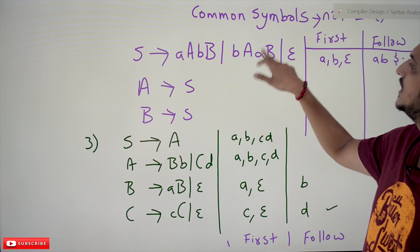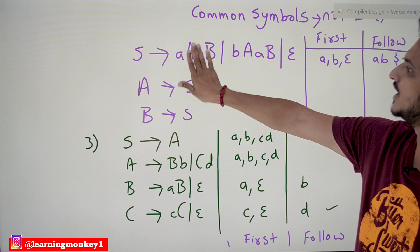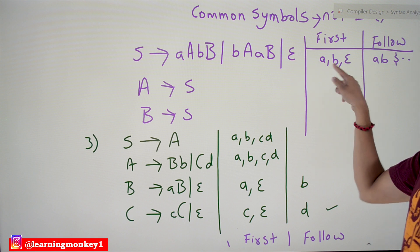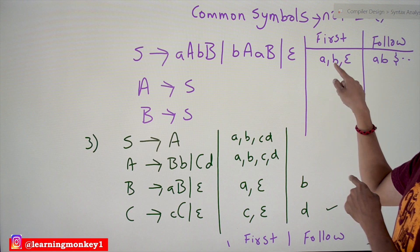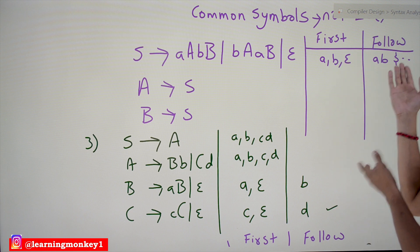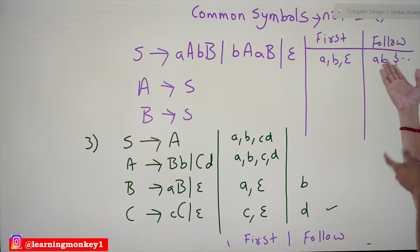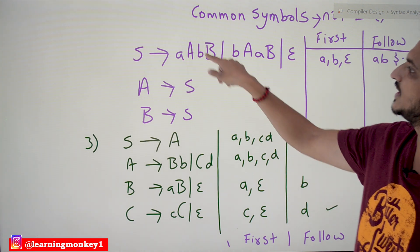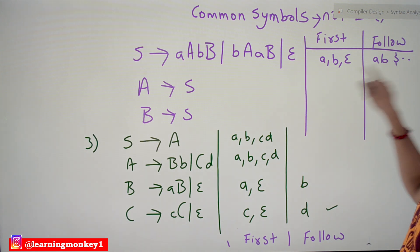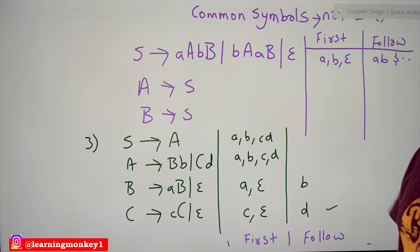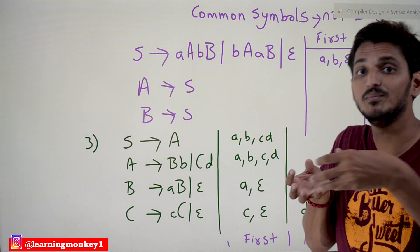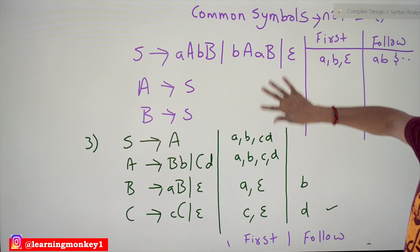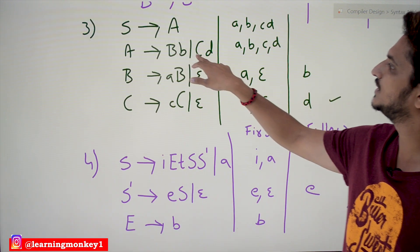Let's take an example: S → aabb | ba | ε. First(aabb) = 'a', First(ba) = 'b', First(ε) = ε. Since there is epsilon, we also need the Follow symbols. The Follow of S contains 'a' and 'b'. There is a collision — S → aabb and S → ε both come into the block for 'a'. So this grammar is not LL1.